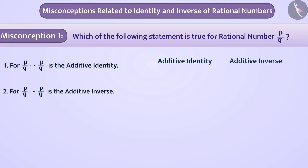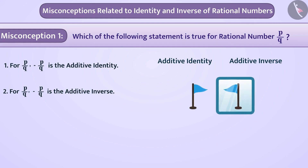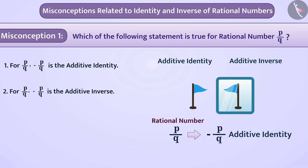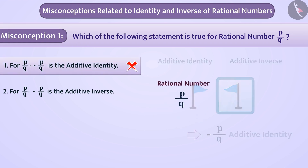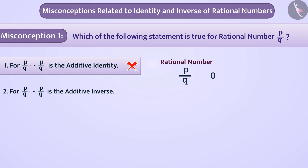They think that, just like an object looks in a mirror, the same applies to the rational number p/q — that (-p/q) is the additive identity of p/q. Therefore, they give the answer as option 1, which is wrong.